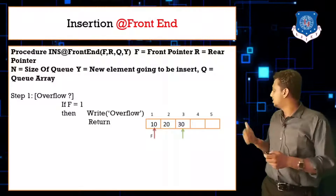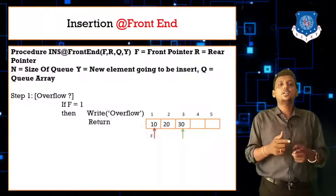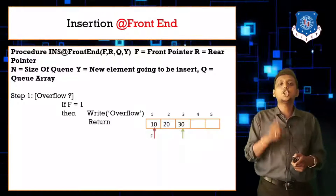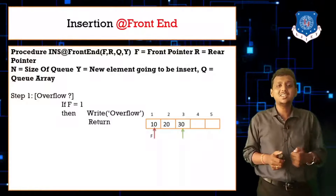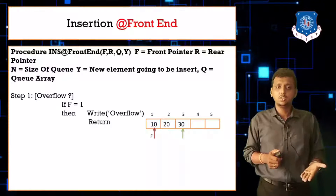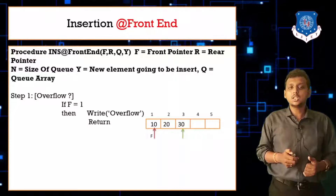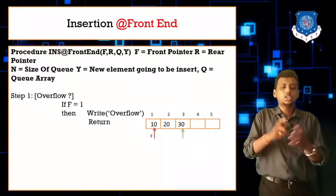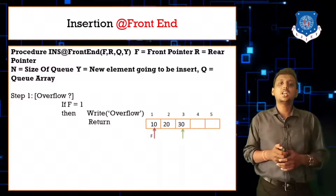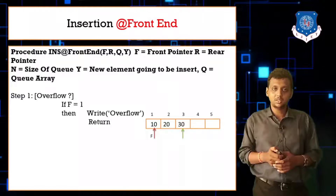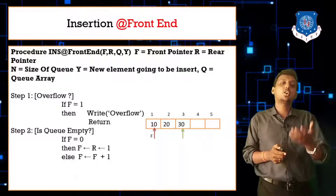This is how front-end insertion occurs. The full algorithm: check overflow (if F equals 1, return). If F equals 0 set F and R to 1, else decrement F. Then assign Q of F equals Y. Remember: always write Q of F when inserting at front position, not Q of R.